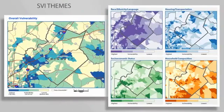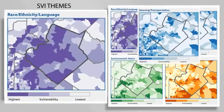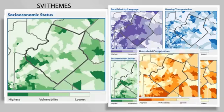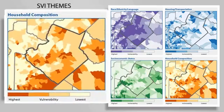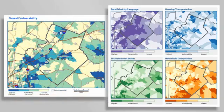Here are SVI maps of Gwinnett County, Georgia, showing each of the four themes as well as its overall social vulnerability. As you can see, the vulnerability of any given tract may vary by theme. Some tracts are highly vulnerable for all four themes and will likely have the highest vulnerability overall. Other tracts may be highly vulnerable on one or more themes, or have low vulnerability on all themes.